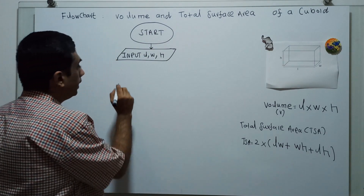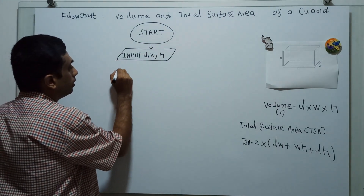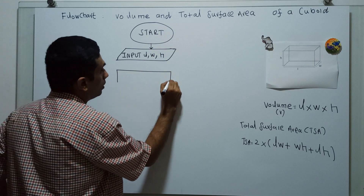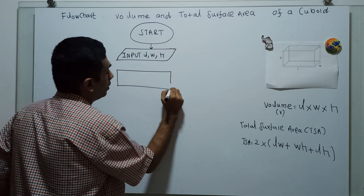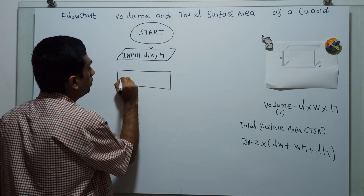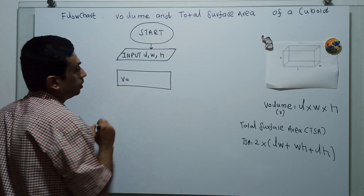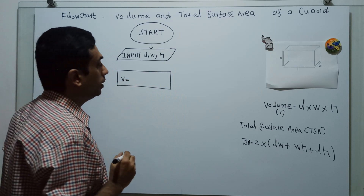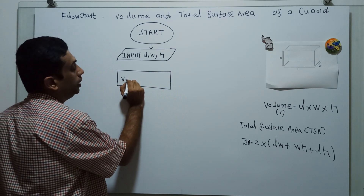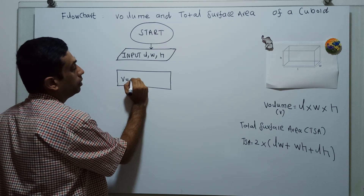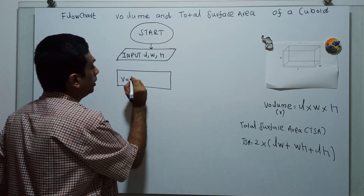Next, I am calculating the volume of the cuboid. Volume is represented by the variable V, where V = length × width × height.